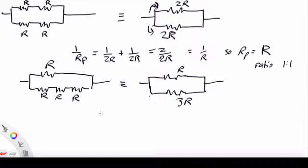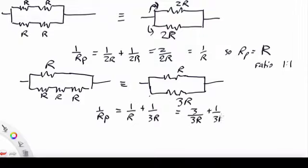Now we can find that 1 over Rp equals 1 over R plus 1 over 3R. So I will make that, put them over the same denominator. 3 over 3R plus 1 over 3R equals 4 over 3R.